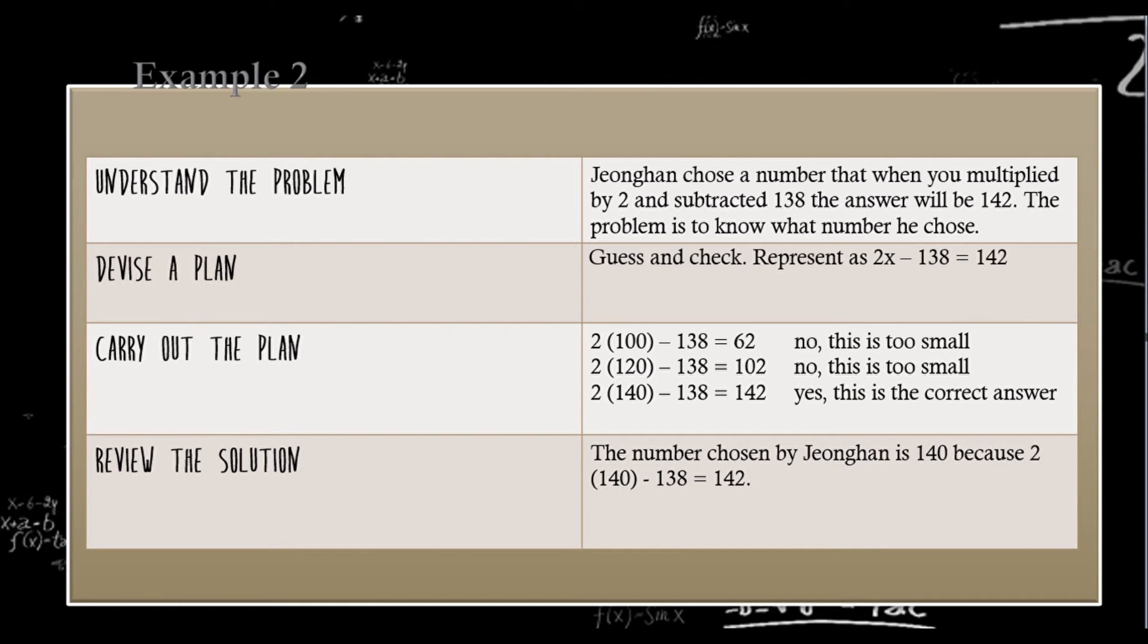In Devise A Plan, we can choose any device, but we prepare as long as we come up with the right answer. In this problem, I use Guess and Check, but I can also use Work Backwards. After using Guess and Check, it will represent as 2x - 138 = 142. To carry out the plan...